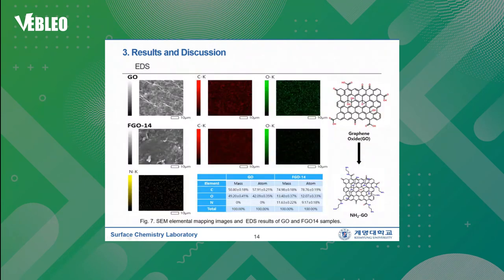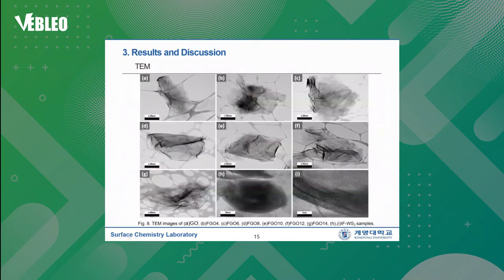This is the elemental mapping images and EDS results of GO and FCO14 samples. As you can see in these images, we observed carbon, oxygen, and nitrogen in the aminized graphene oxide. This is also SEM images taken for the sample of FCO14 and inorganic fullerene-like tungsten disulfide. We can see a pile of layer structures of IFWS2, like an onion.